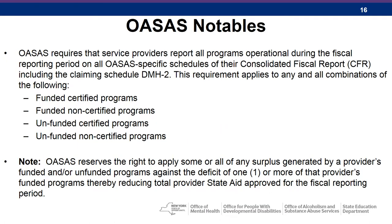OASIS requires that service providers report all programs operational during the fiscal reporting period on all OASIS specified schedules of their CFR, including the claiming schedule DMH-2. This requirement applies to any and all combinations of funded certified programs, funded non-certified programs, unfunded certified programs, and unfunded non-certified programs. Note: OASIS reserves the right to apply some or all of any surplus generated by a provider's funded and/or unfunded programs against the deficits of one or more of the provider's funded programs, thereby reducing total provider state aid approved for the fiscal reporting period.